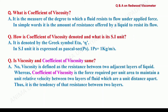What is coefficient of viscosity? It is the measure of the degree to which a fluid resists flow under applied force — in simple words, the amount of resistance offered by a liquid to resist its flow. It is denoted by the Greek letter eta, and in SI unit it is expressed as pascal second, where 1 pascal second equals 1 kilogram meter inverse second inverse. Is viscosity and coefficient of viscosity the same? No. Viscosity is defined as the resistance between two adjacent layers of a liquid, whereas coefficient of viscosity is the force required per unit area to maintain a unit relative velocity between two layers of fluid which are a unit distance apart.